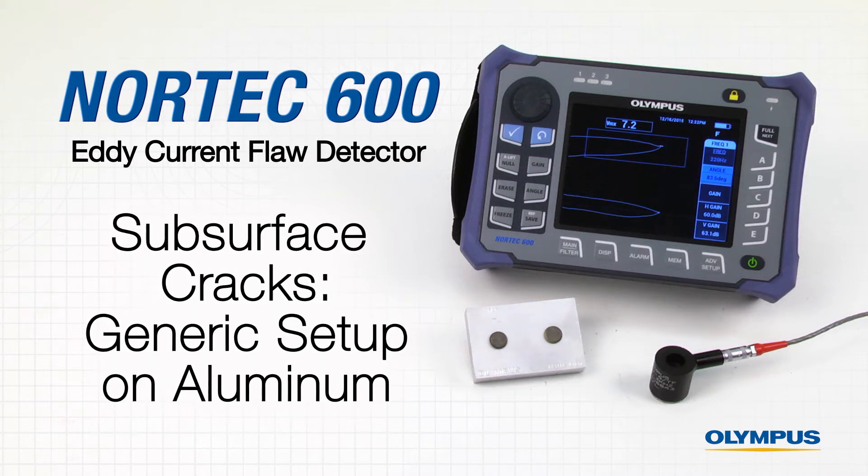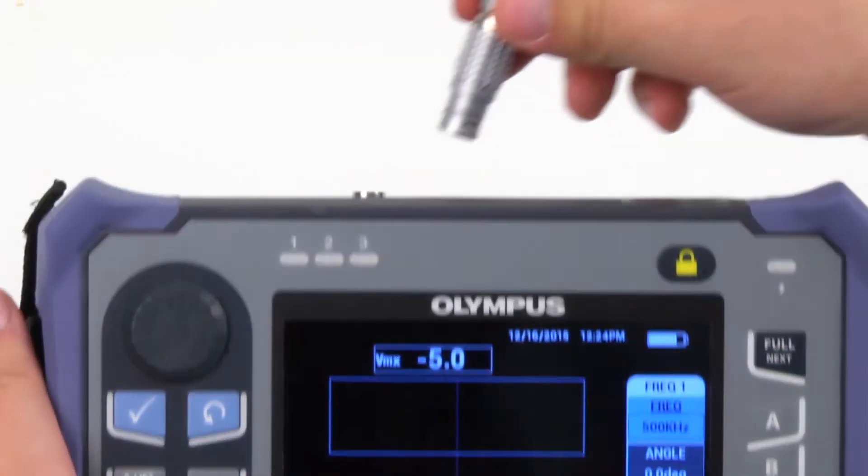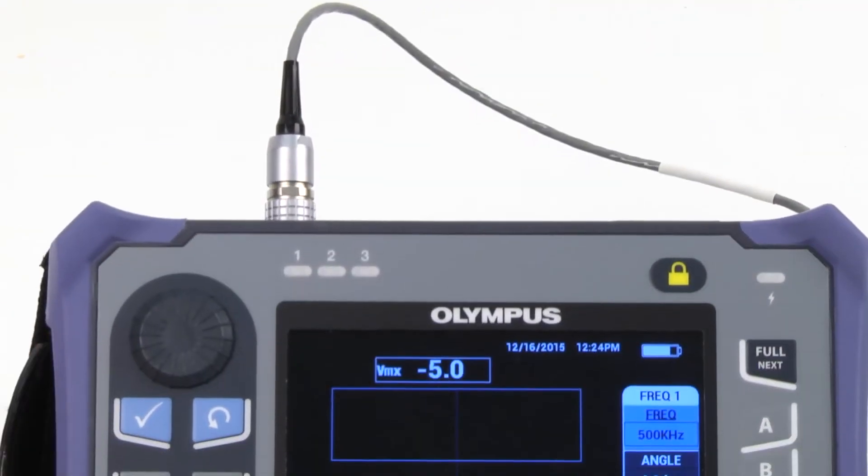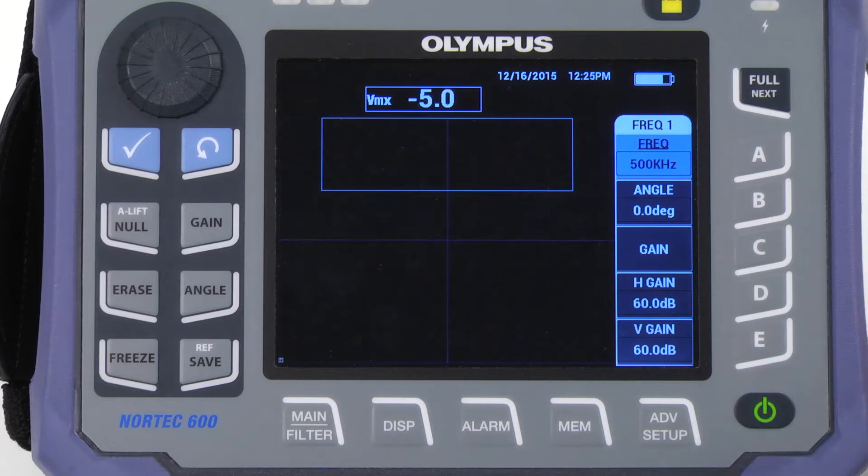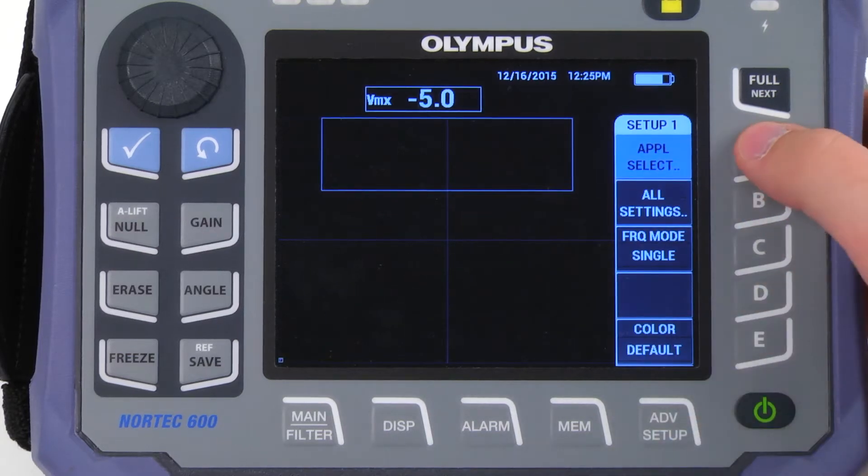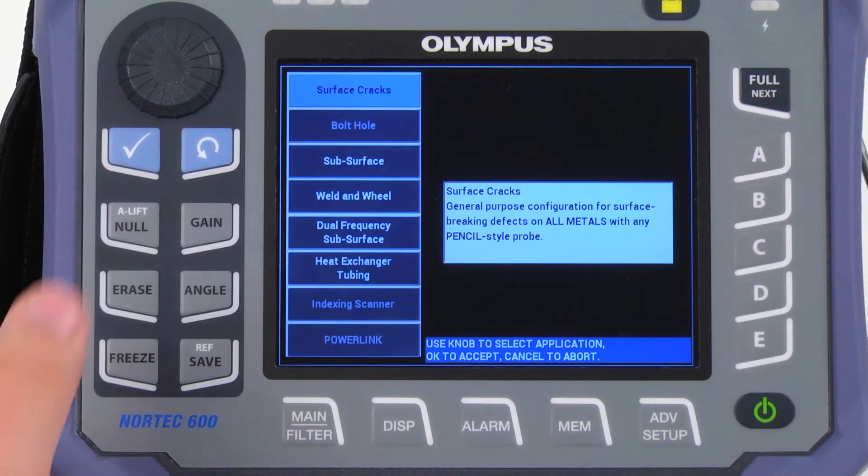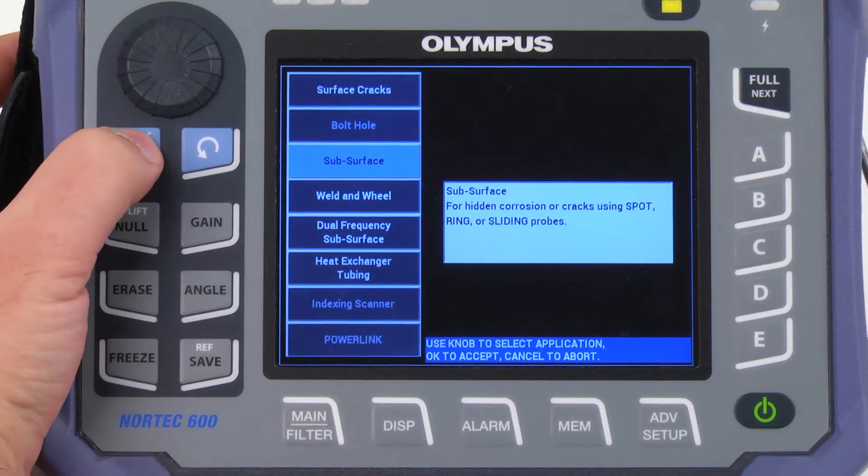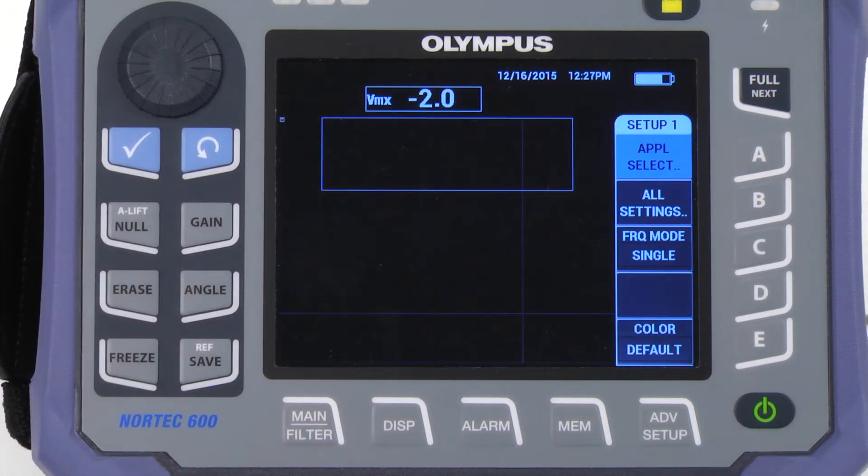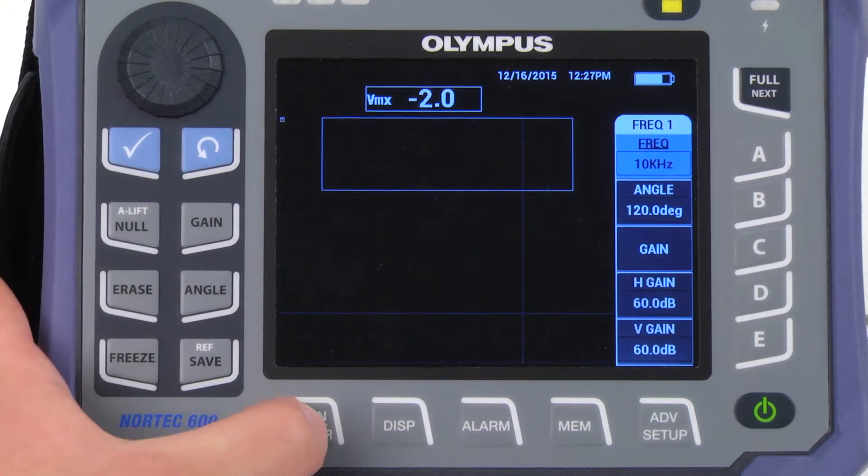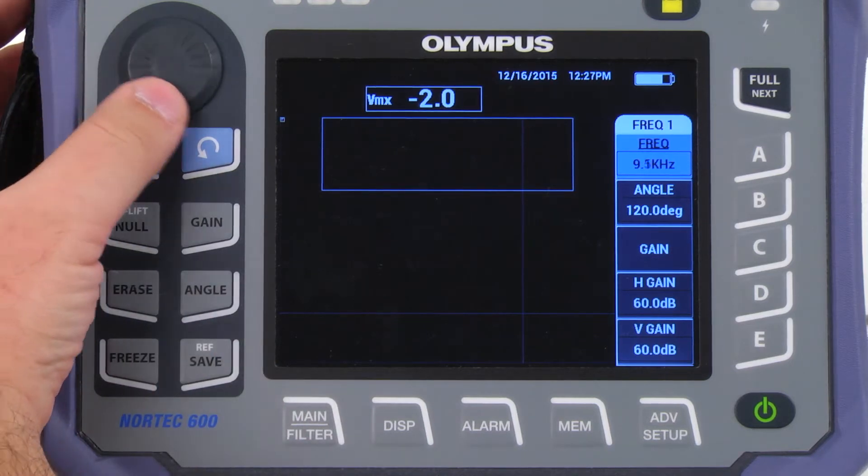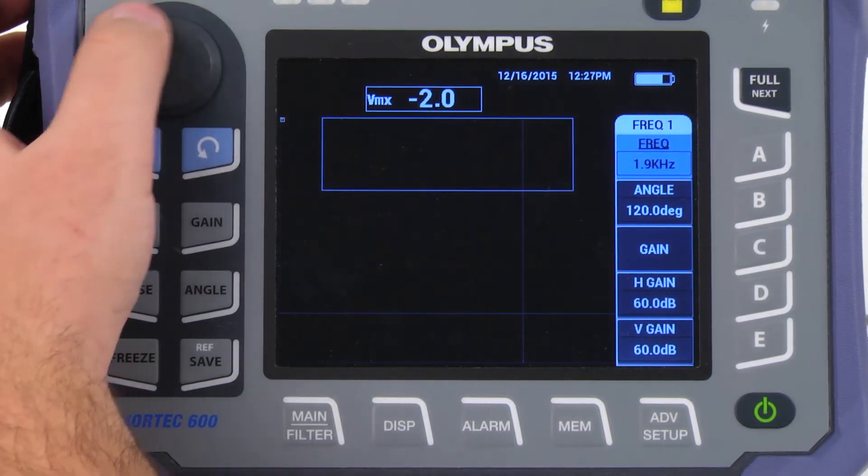For subsurface crack inspection, connect an appropriate probe to the Nortec 600. Press the Advanced Setup key, then Application Selection. Select Subsurface from the menu using the knob and press the checkmark key to accept. Press the main key to set the frequency. In this case, we know the correct frequency and we will set it using the knob.